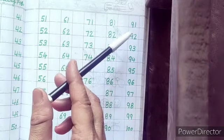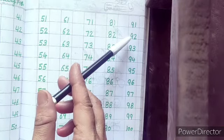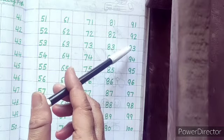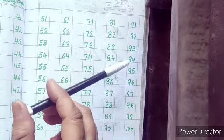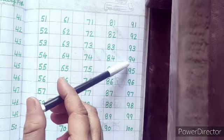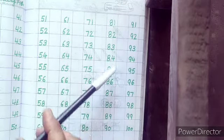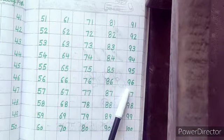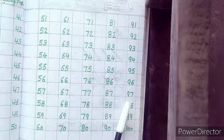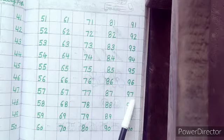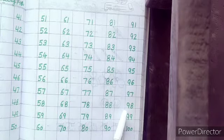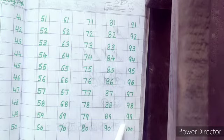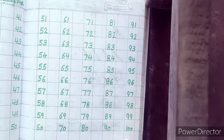91. Then after 92, 93, 94. Then after 95, 96. Then after 97. Then 98. Then after 99, 100.